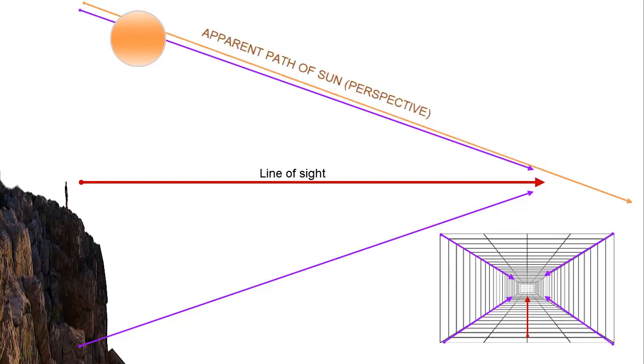And here we have the Sun and the path it will appear to take as it travels across the sky, maintaining a constant distance above the Earth.